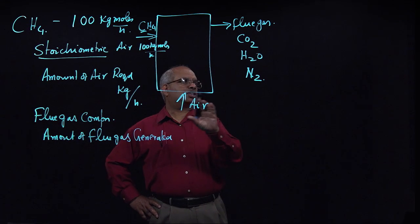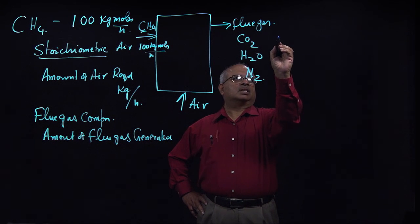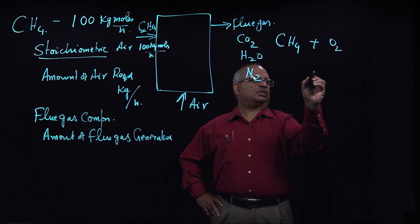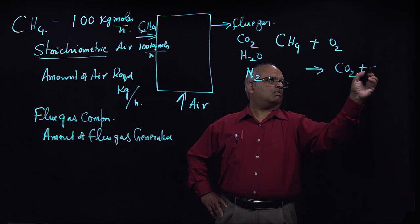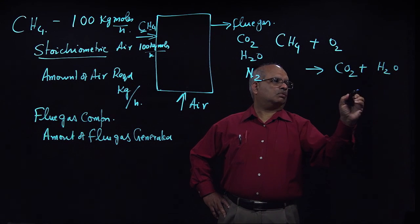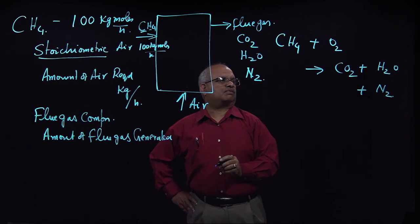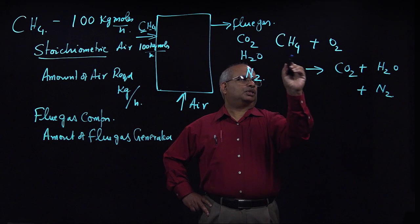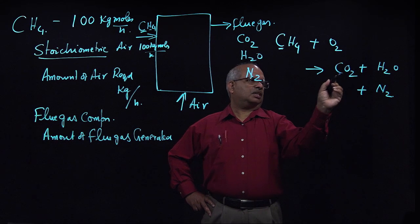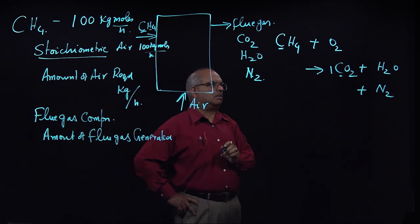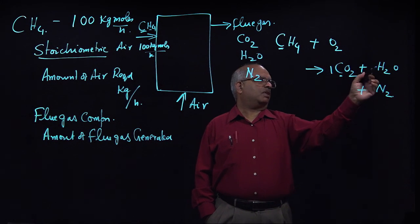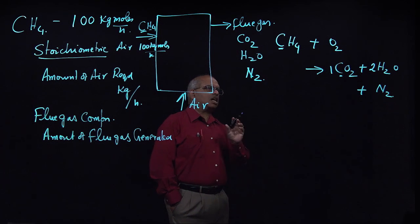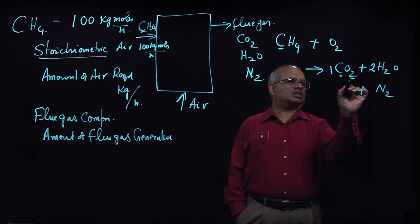Let's write down the combustion equation. CH4 is reacting with oxygen, producing CO2 plus water vapor, and there will also be some nitrogen. Every mole of carbon burned produces one mole of carbon dioxide — methane has one carbon, so one CO2. For hydrogen, we have four hydrogen atoms in methane and two per water molecule, so two moles of water vapor form. That gives us our oxygen requirement.